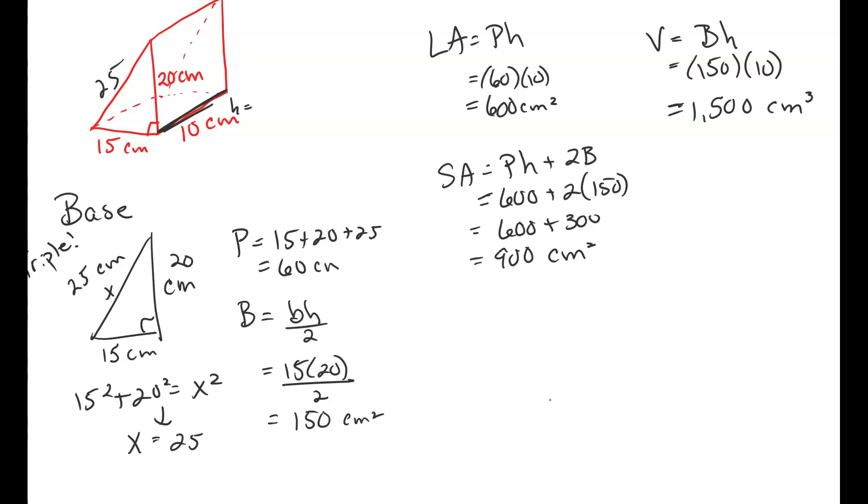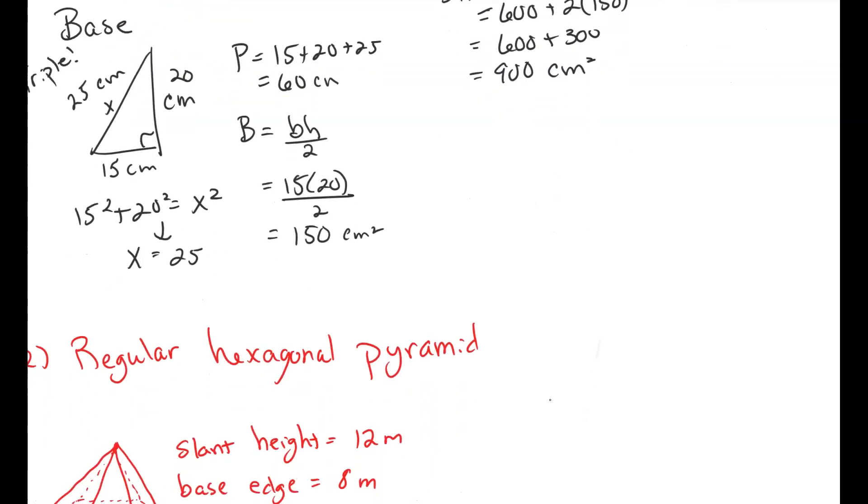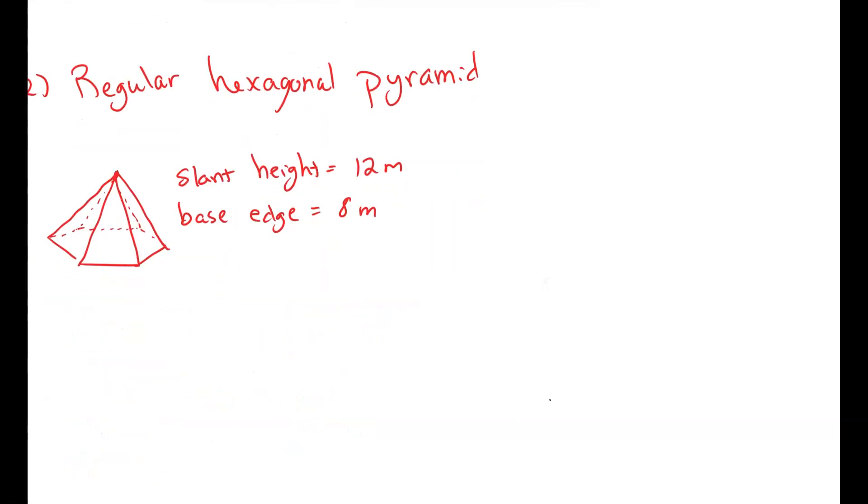Now I'll tell you right now, you will have a hexagonal prism that you are going to have to work with. But we are going to use an example now of using a hexagonal pyramid instead. Okay, so the next one we're going to do is we're going to do the regular hexagonal pyramid.